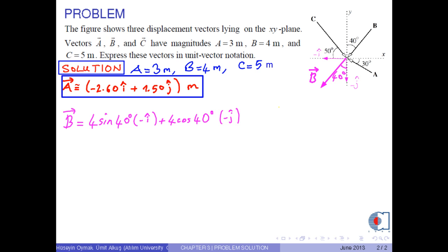If we calculate, we obtain vector b is approximately minus 2.57 i hat minus 3.06 j hat in meters.